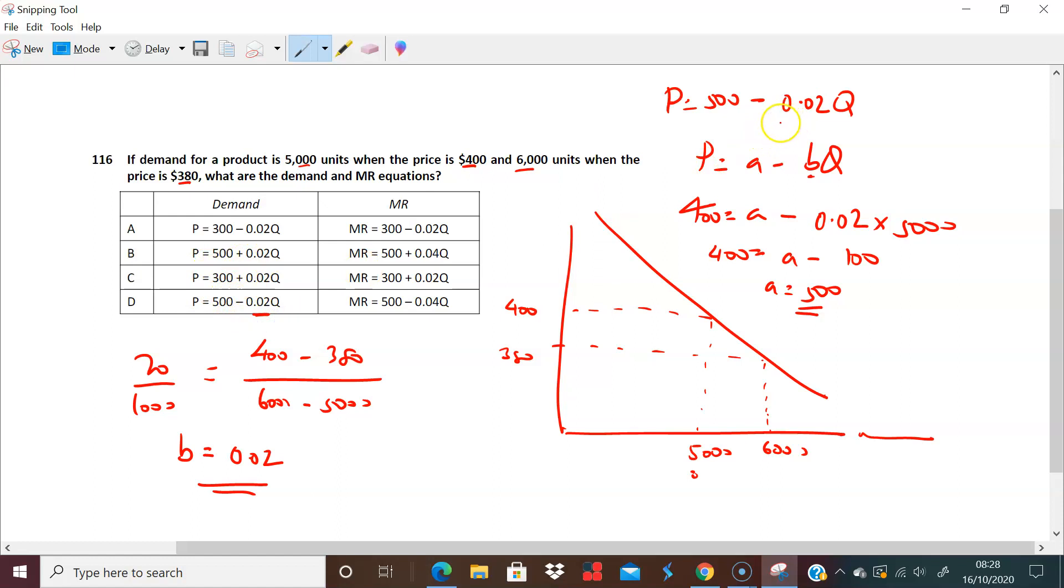So the MR is literally, like we said, we agreed that we just multiply the B by 2, and the MR becomes 500 minus 0.04Q. And that gives us the answer as D.